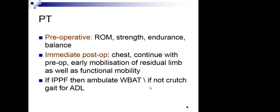Most amputations, except in severe trauma, are elective surgeries, allowing two to three weeks for pre-operative management. In a good amputation team, the physiotherapist and occupational therapist are involved when the surgeon decides amputation is necessary. In the pre-operative period, the goals are to increase range of motion, strength, endurance, and balance, and to provide training regarding what the patient can expect after amputation.